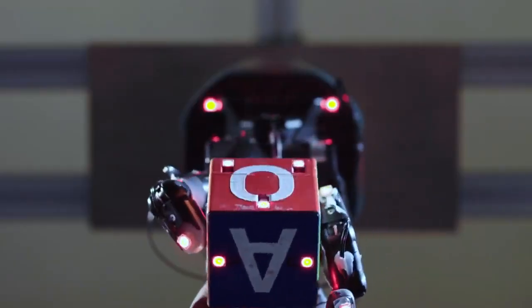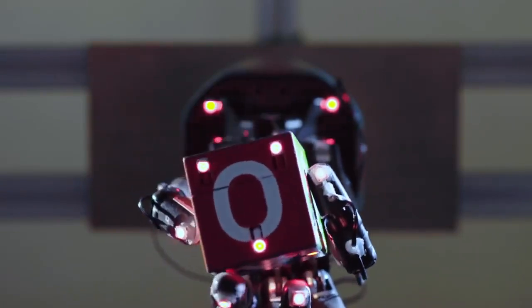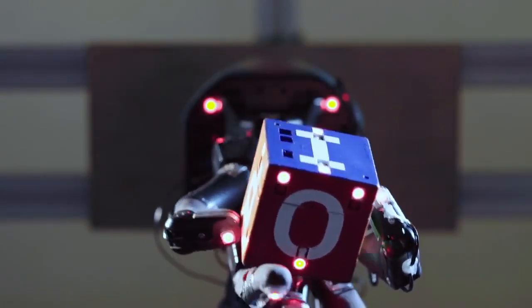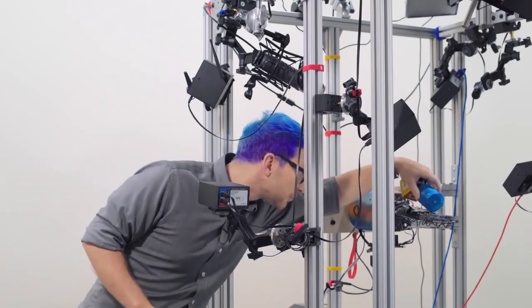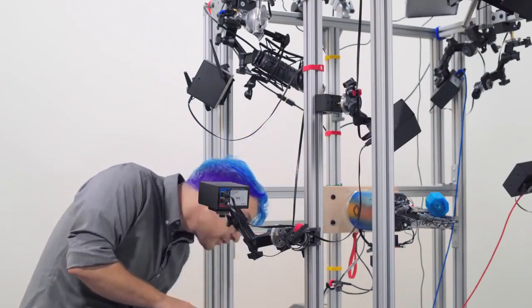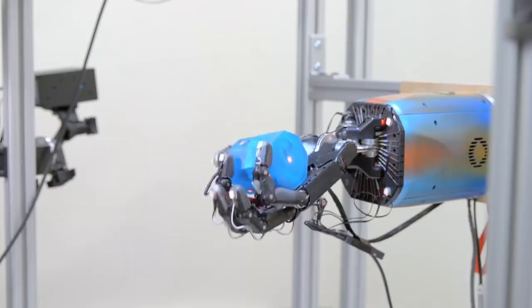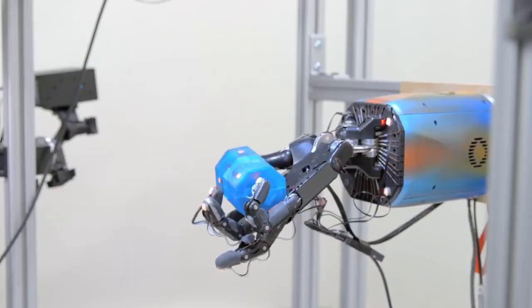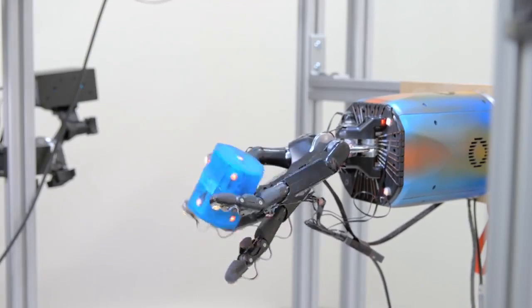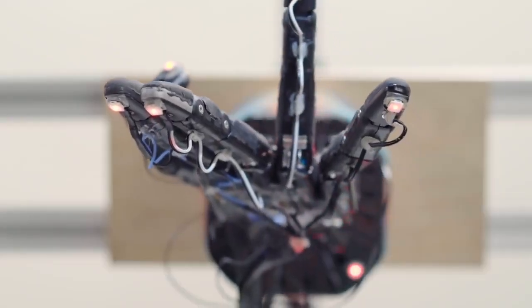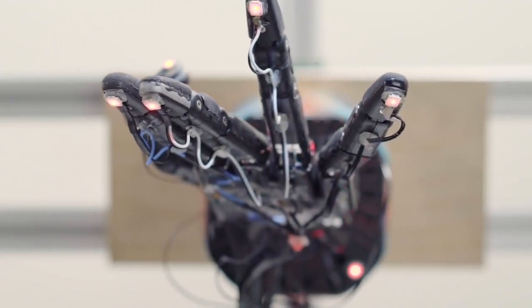Although the first humanoid hands were developed decades ago, using them to manipulate objects effectively has been a long-standing challenge in robotic control. Unlike other problems such as locomotion, progress on dexterous manipulation using traditional robotics approaches has been slow, and current techniques remain limited in their ability to manipulate objects in the real world.